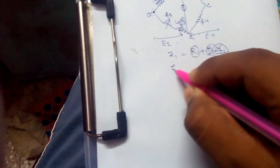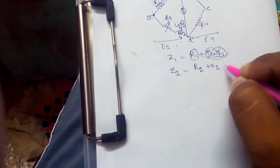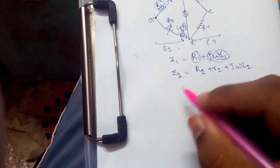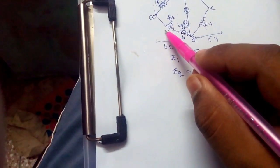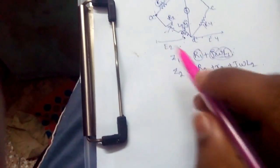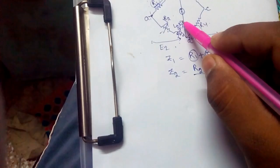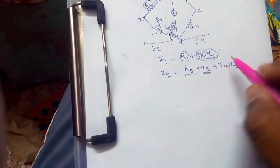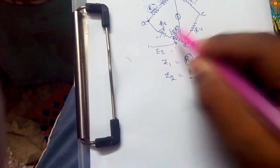Similarly, Z2 would be R2 plus r2 plus j omega L2. R2 is the non-inductive resistance. R2 is connected in series with L2, that's why we are adding r2. And j omega L2 is for the variable inductance.